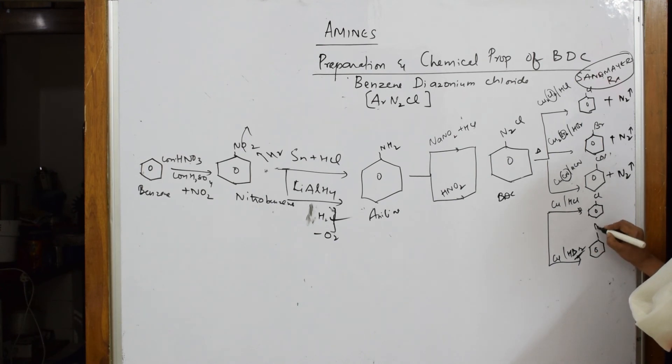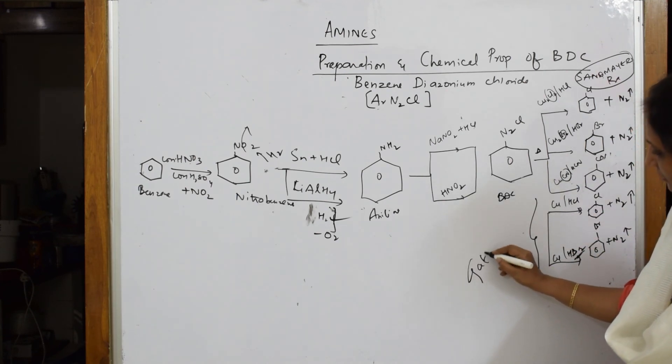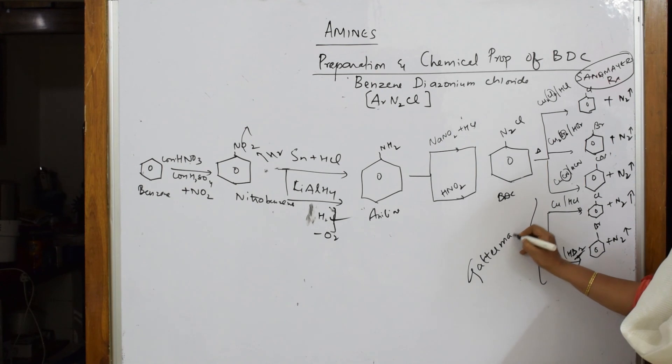Like this Cl and here the product which I obtain is this - Br plus nitrogen gas escapes out, plus nitrogen gas escapes. So this particular reaction with Cu by HCl, Cu by HBr is called Gatterman reaction.